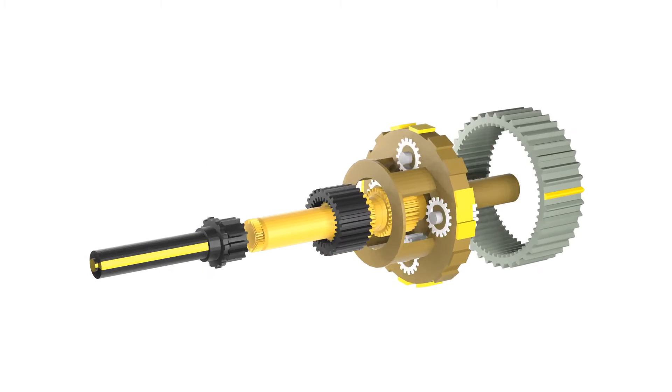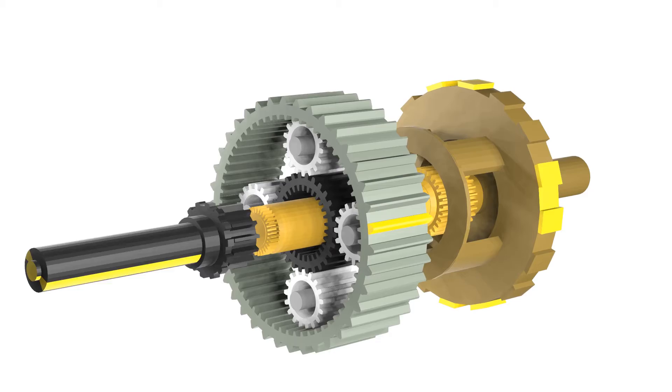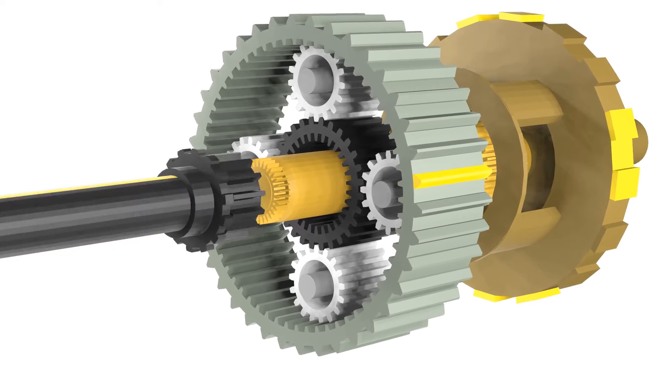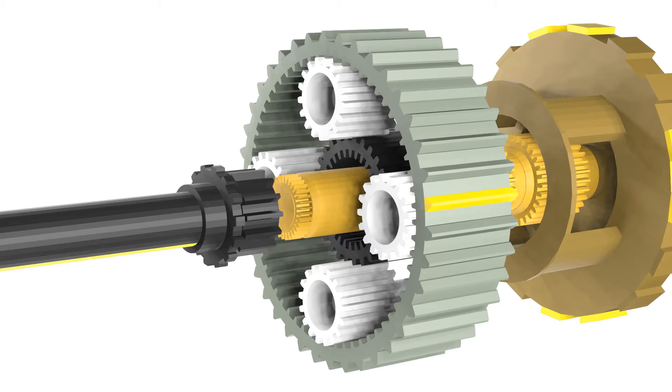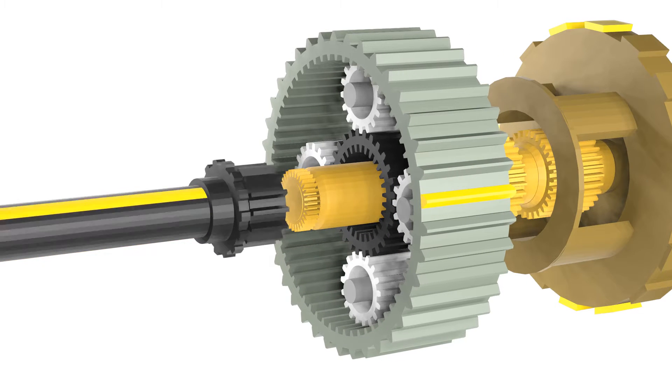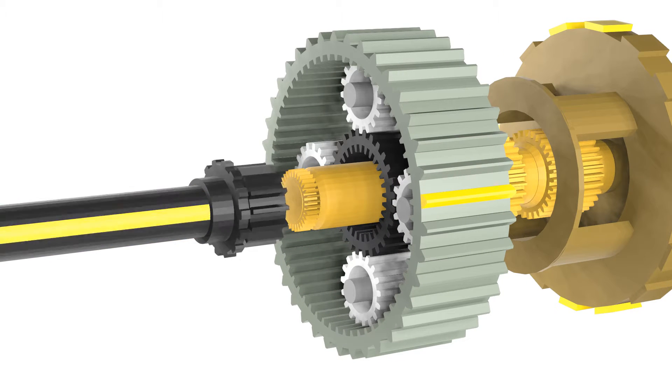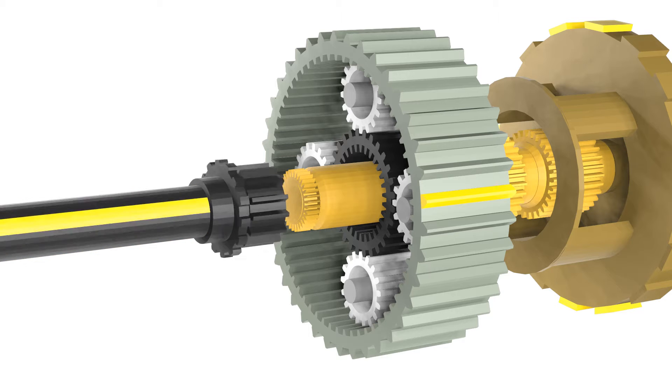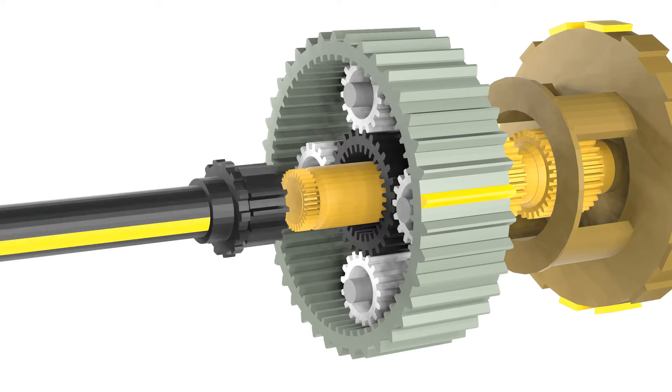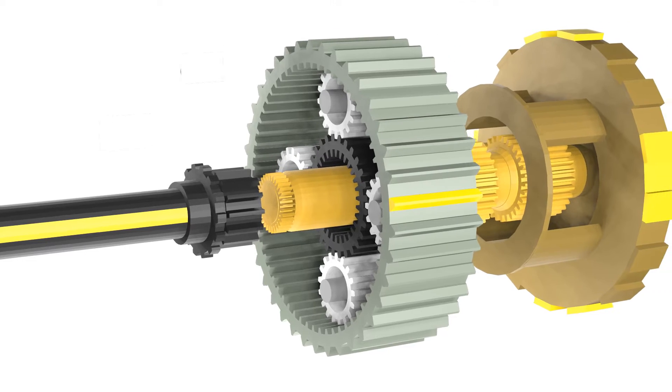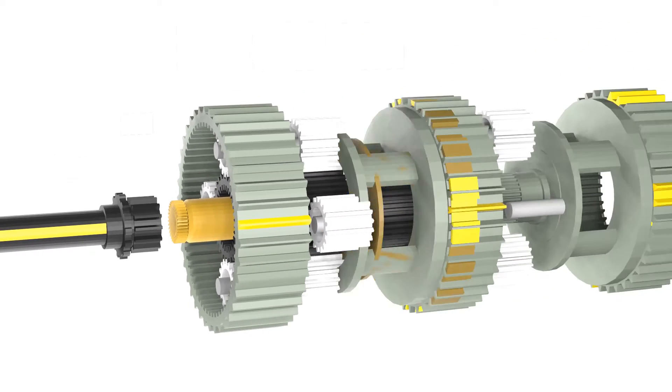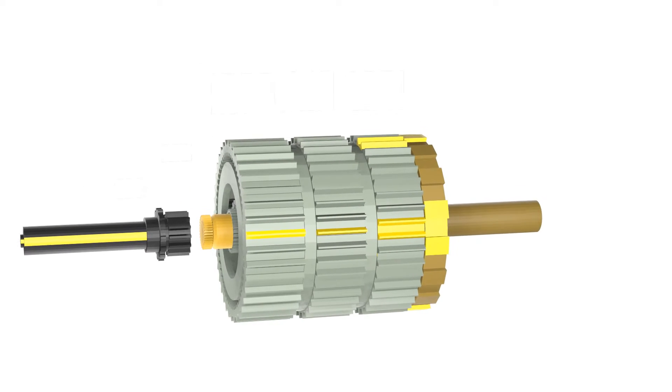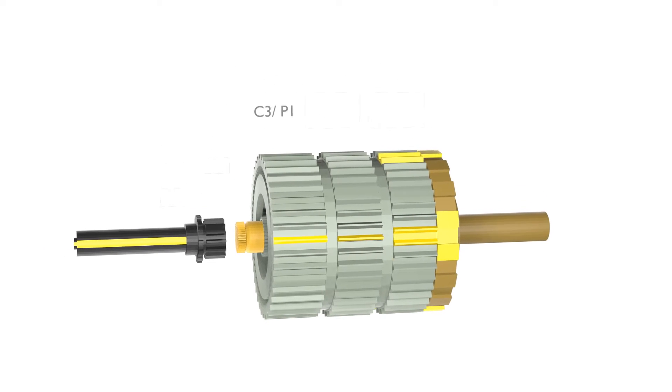We'll start off with the planetary gear system. We have three parts of one planetary system: the sun, the planets, and the ring gear. They'll work together to produce certain gear ratios that deliver necessary speeds to your vehicle. All together, we'll have three planetary gear systems. They're called C3 P1 planetary, C4 P2 planetary, and C5 P3 planetary.